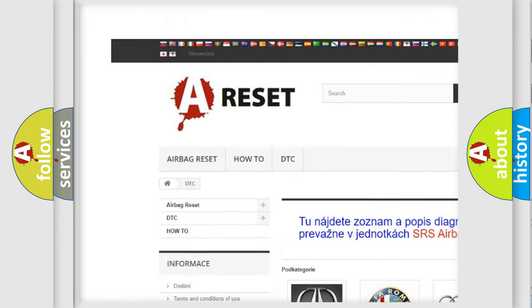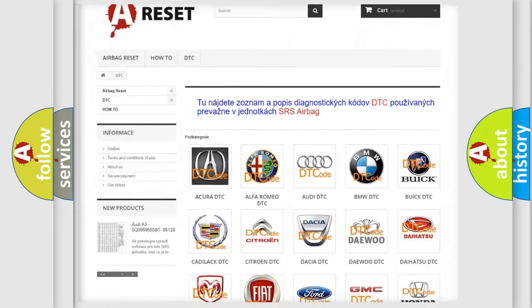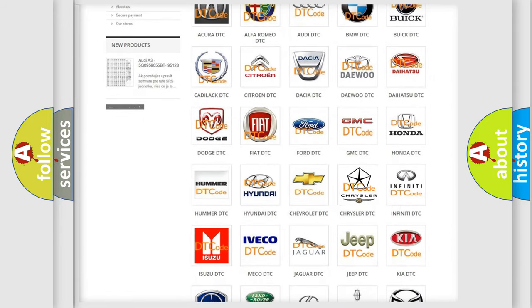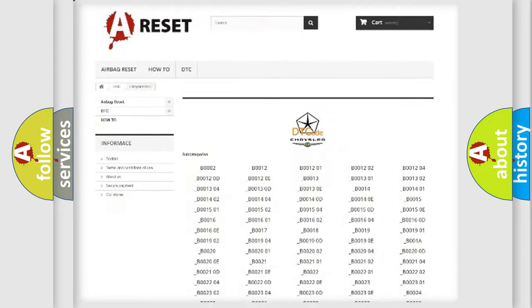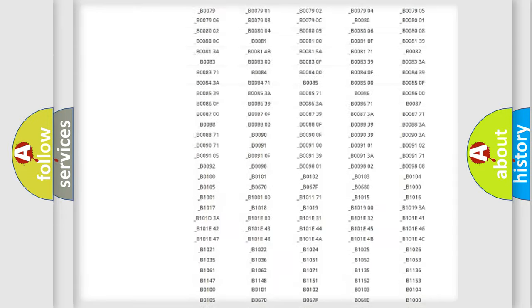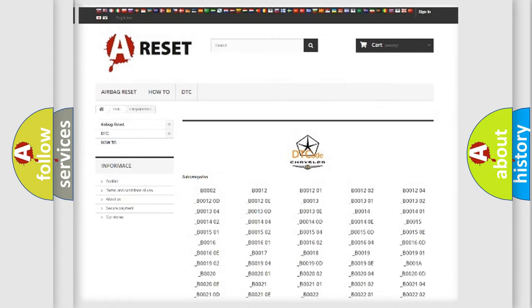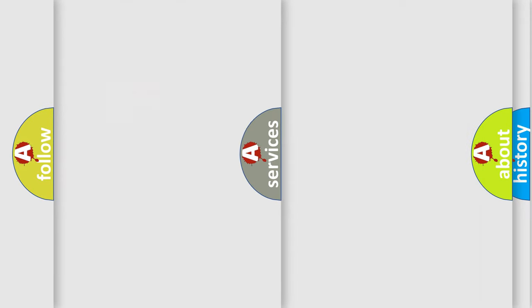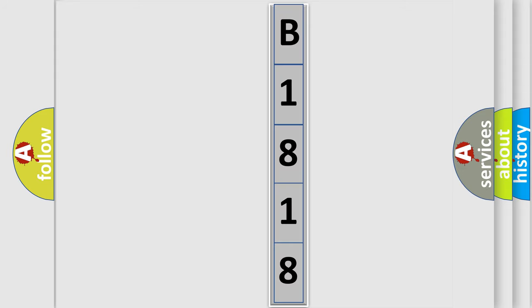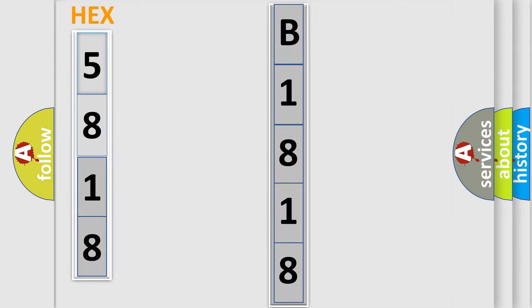Our website airbagreset.sk produces useful videos for you. You do not have to go through the OBD2 protocol anymore to know how to troubleshoot any car breakdown. You will find all the diagnostic codes that can be diagnosed in Chrysler vehicles, and many other useful things. The following demonstration will help you look into the world of software for car control units.